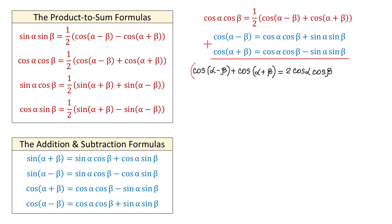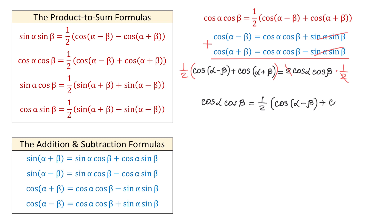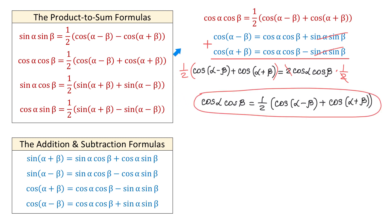And now, we will multiply both sides by one-half. And on the right side, two and two will cancel. And now, I will start with cosine of alpha cosine of beta, and we will have cosine of alpha cosine of beta equals one-half cosine of alpha minus beta plus cosine of alpha plus beta. And this is the second formula.